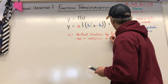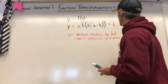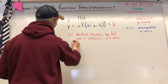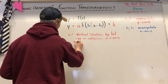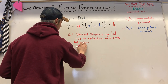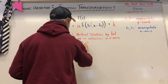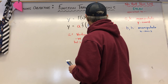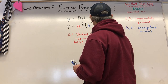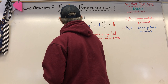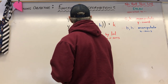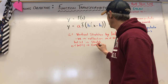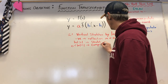If a is negative, that means we have a reflection in the x-axis, and we can hold both the stretch and the reflection together. If the absolute value of a is greater than one we get a stretch; if it equals one it stays the same. If the absolute value of a is between zero and one — so a is a fraction — we're going to have compression, which means we just squish it.